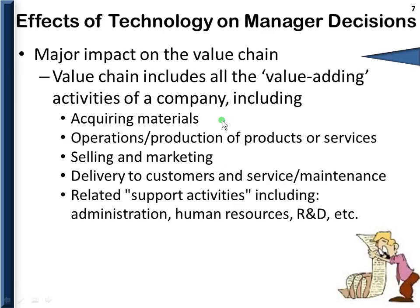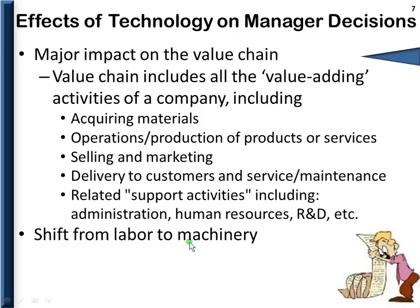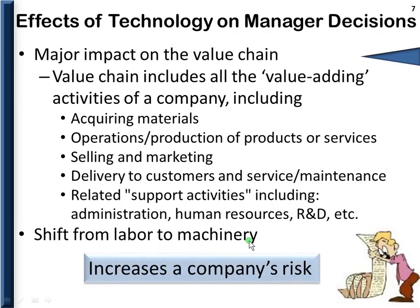Over the last 10 to 15 years, there has been a big shift from labor to machinery. Companies are acquiring machines that can do the work that laborers were doing in the past. If a company needs to downsize its workforce, it can lay off employees relatively quickly. But if a company relies heavily on machinery and needs to downsize, it takes quite a while to uninstall the machinery, put it up for sale, and turn it into cash. That makes a company more risky if it's holding more machinery — including all property, plant, and equipment assets.